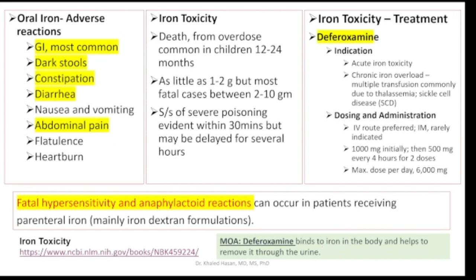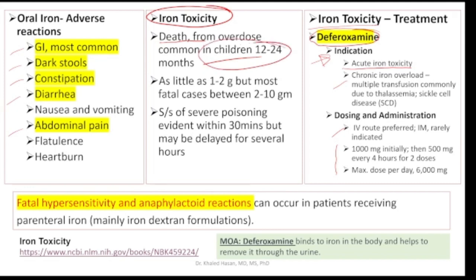Another important issue is iron toxicity, which can lead to death with overdose — especially in children. It is recommended for emergency centers and hospitals to have an antidote for iron toxicity. The antidote is deferoxamine, which is used for acute iron toxicity and can also be used for chronic iron overload, administered IV. When a patient presents with GI symptoms such as dark stool, constipation, diarrhea, and abdominal pain while on iron products, think about iron toxicity — there is a very high risk of death in children.